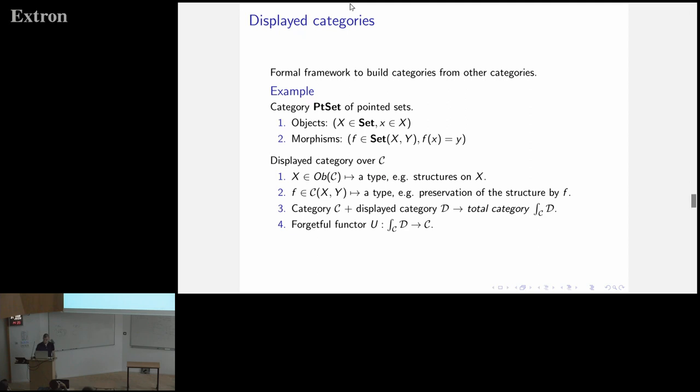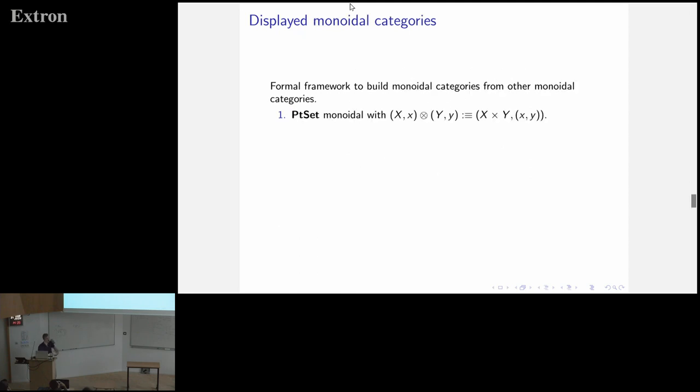And then a monoidal displayed category, it is precisely the same framework for constructing monoidal categories. So if you consider, for example, the category of point set again, it's a Cartesian monoidal category. So it just, well, this structure is just the underlying, let's say, tensor product of the category of sets, just a Cartesian product. Just combine the two. And so here you have that, here again, you use, again, that set is a Cartesian monoidal category. And so, in that setting, we also want to do the same thing. We don't want to really explicitly say again, okay, set is a monoidal, copy-paste, all the proof for that.